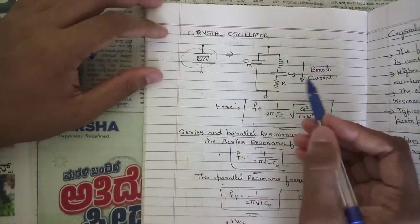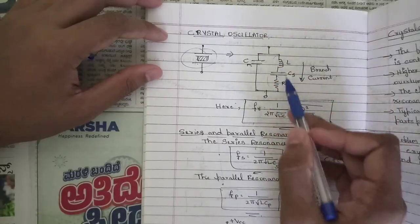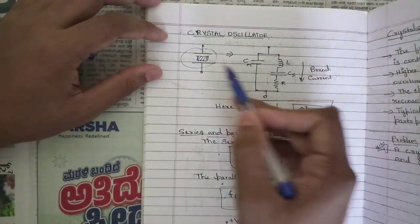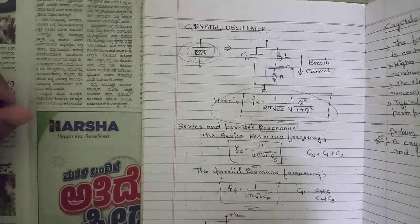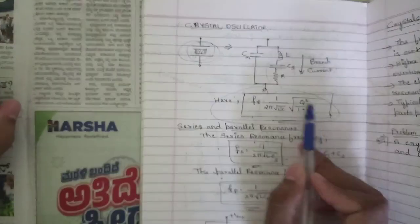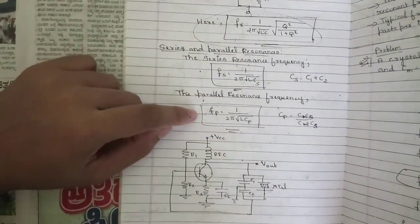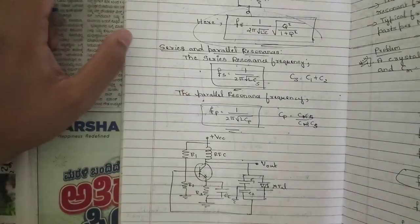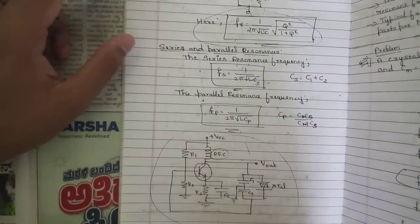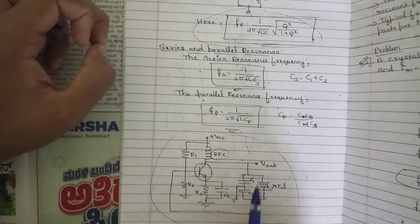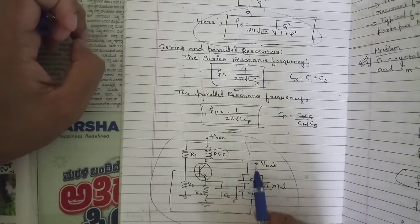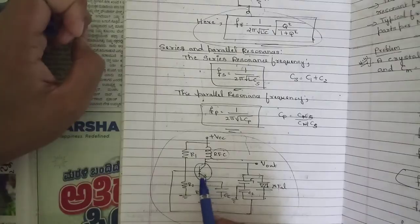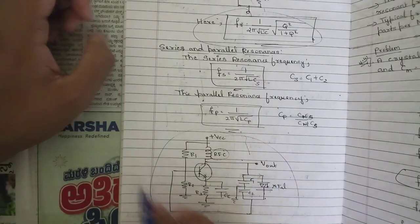One important concept is the crystal oscillator, where the crystal branch is represented as an LCR network. The resonance frequency for the crystal oscillator is f = 1 / (2π√LC) × √(Q² / (1 + Q²)). Note the conditions for series and parallel resonances. The crystal oscillator circuit uses a voltage divider bias circuit, an RFC (radio frequency coil), and connects the crystal oscillator circuit directly to the base terminal of the transistor — note this circuit, it is very important.